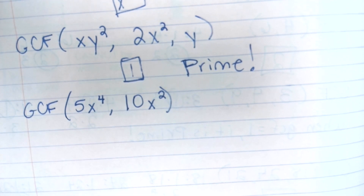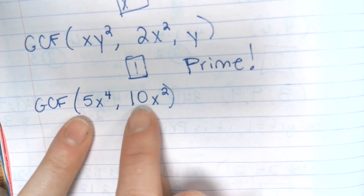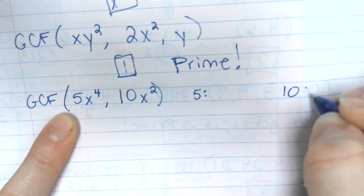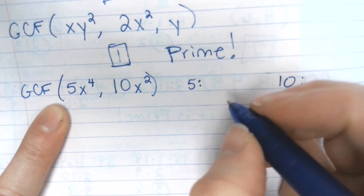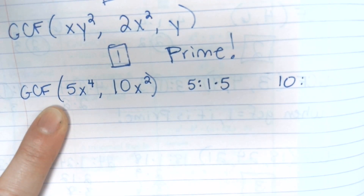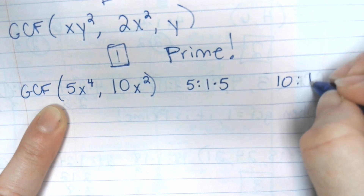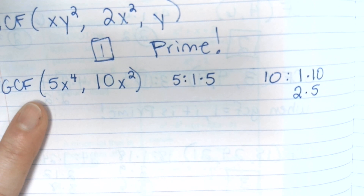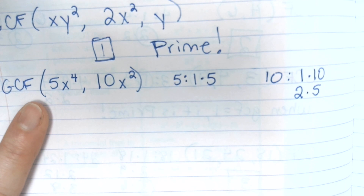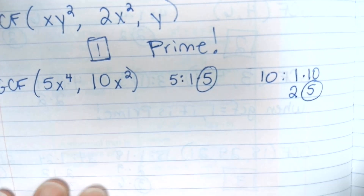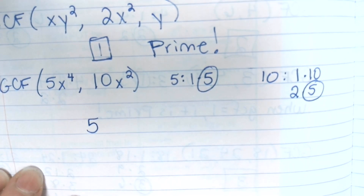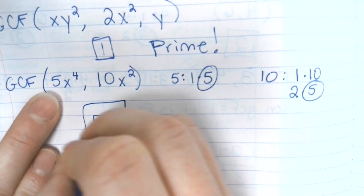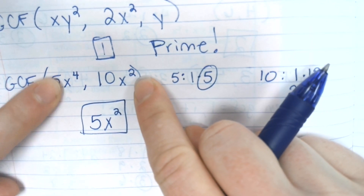We have a mixture of numbers and variables. Start with the numbers 5 and 10. What's our number GCF? Five. Now what is our variable GCF? x squared — because they both have x squared hidden in there. This term has x squared, and x to the fourth means there's an x squared in there. So the GCF is 5x squared.